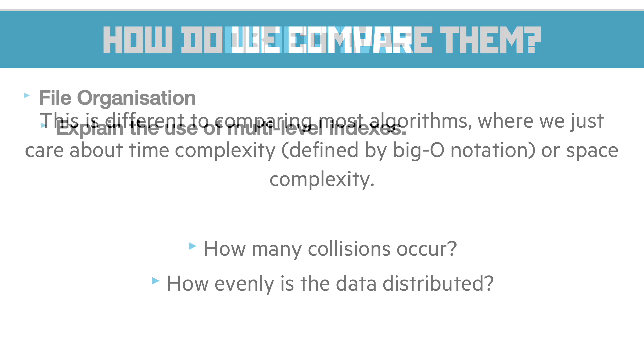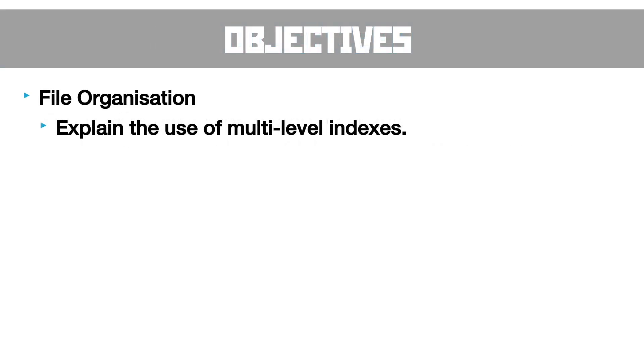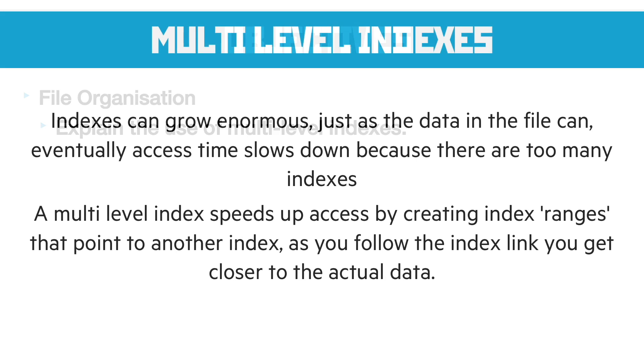Final objective is file organization, the use of multi-level indexes. And so the idea is that if we are indexing a file, they can grow enormous, just as the data in the file can. And it'll slow down the access times massively the larger and larger they get. A multi-level index will speed that up by chopping them up into ranges. And we have a couple of indexes, and each index points to another until it finally points to the correct file.